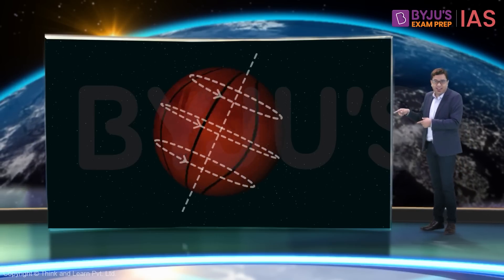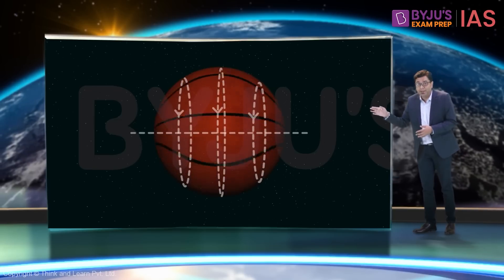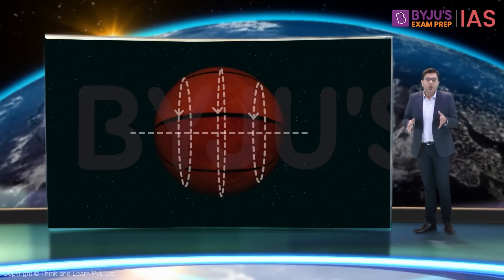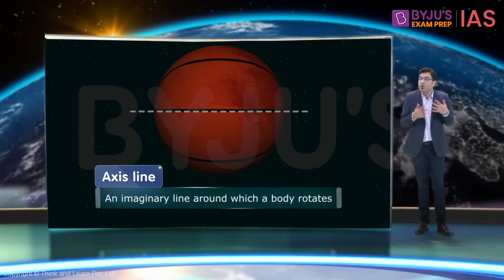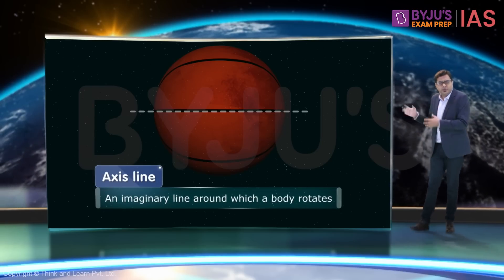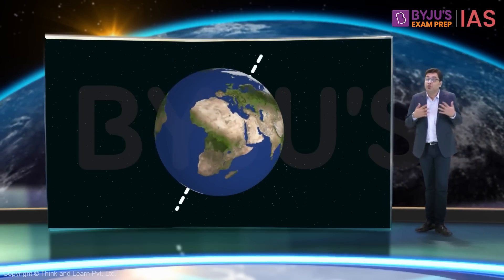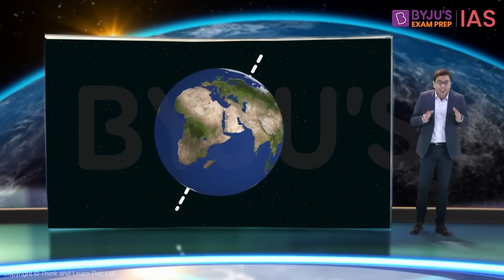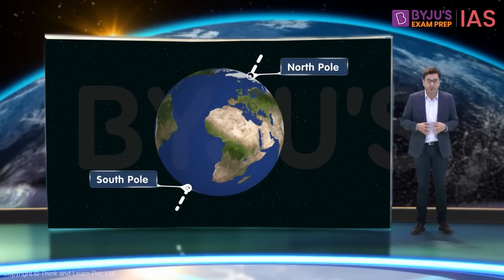Now I can change this axis. It could be here or something along this line. Thus, we can say that the axis is an imaginary line around which a body rotates. Just like this ball, the earth also has an axis around which it rotates. This imaginary line passes through the north and the south poles of the earth.